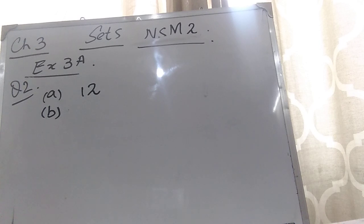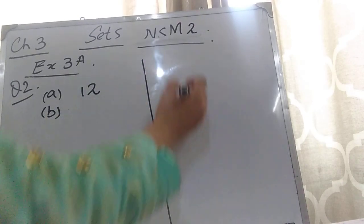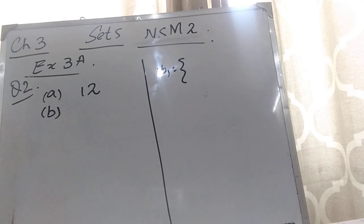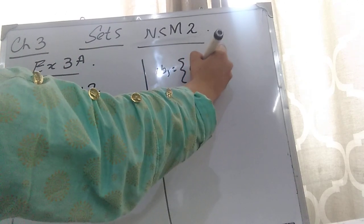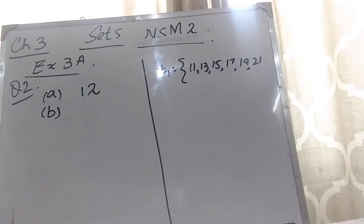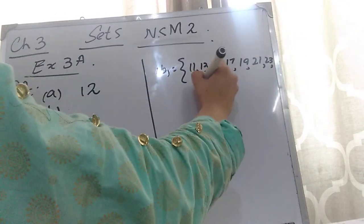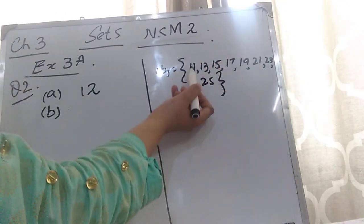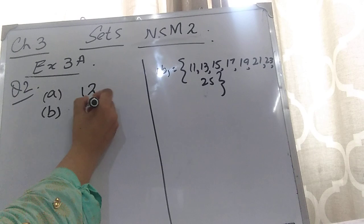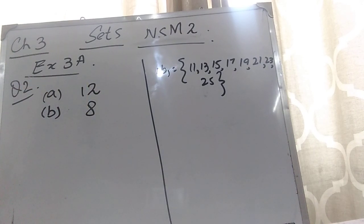Part B: odd numbers between 10 and 26. You have to write the numbers and then count them. Let's write in rough work: the odd numbers between 10 and 26 are 11, 13, 15, 17, 19, 21, 23, and 25. Now count them: 1, 2, 3, 4, 5, 6, 7, 8. So the number of elements is 8 — there are 8 odd numbers between 10 and 26.